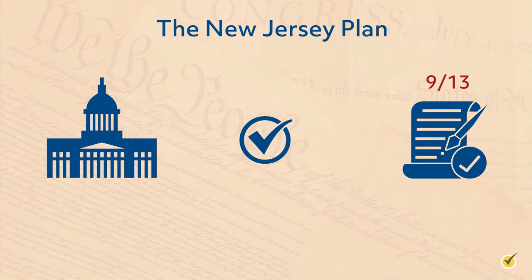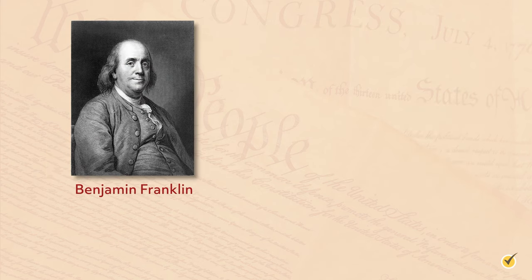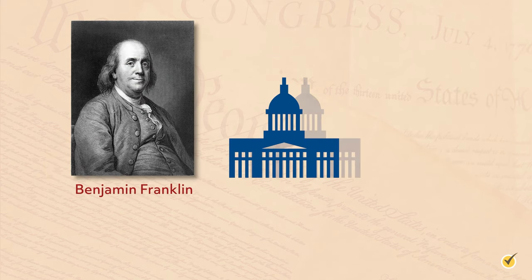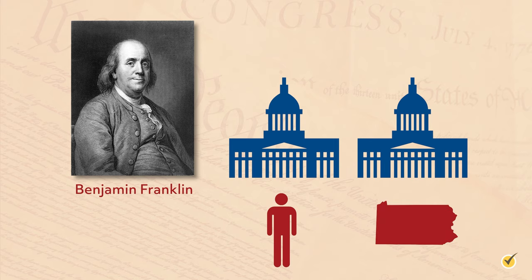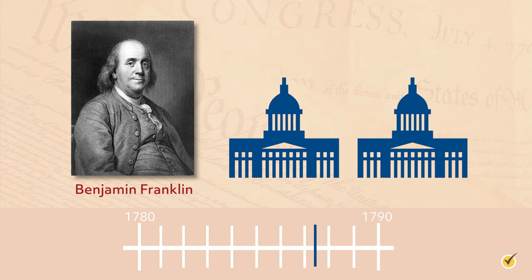To save the convention, the greatly respected elder statesman Benjamin Franklin offered a compromise: two legislative branches — one determined by proportional representation and the other by states. Franklin himself was more in favor of a single body chosen by the people but realized a compromise solution was better than none at all. On July 16th, the compromise was passed by a narrow margin.